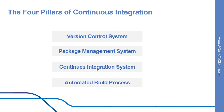The third pillar is the continuous integration system. A continuous integration system merges all developer working copies to a shared mainline several times a day. This includes Azure DevOps, TeamCity, and Jenkins. The fourth pillar is an automated build process, which creates a software build including compiling, packaging, and running automated tests. This includes Apache Ant and Gradle. Please note that for each element, your team needs to select a specific platform and tools they will use, and you must ensure that you have established each pillar before proceeding.